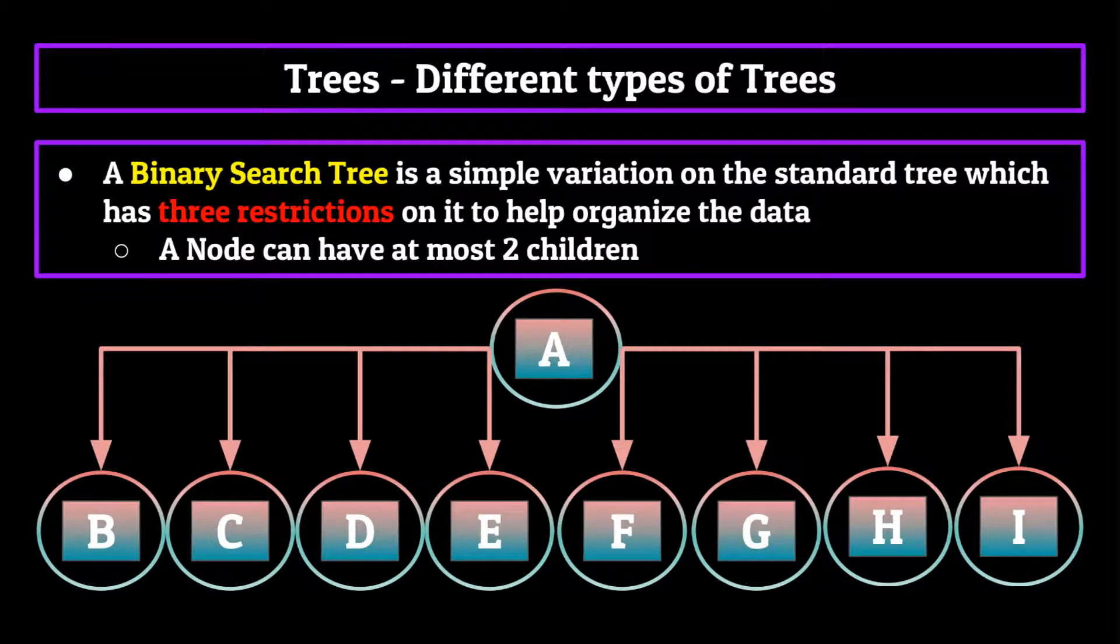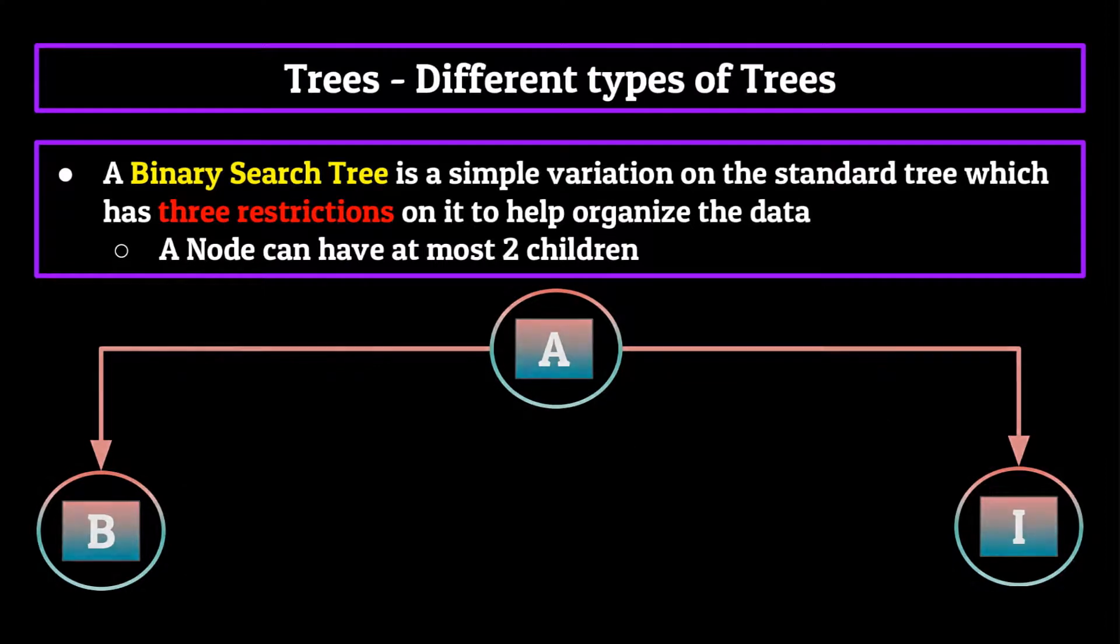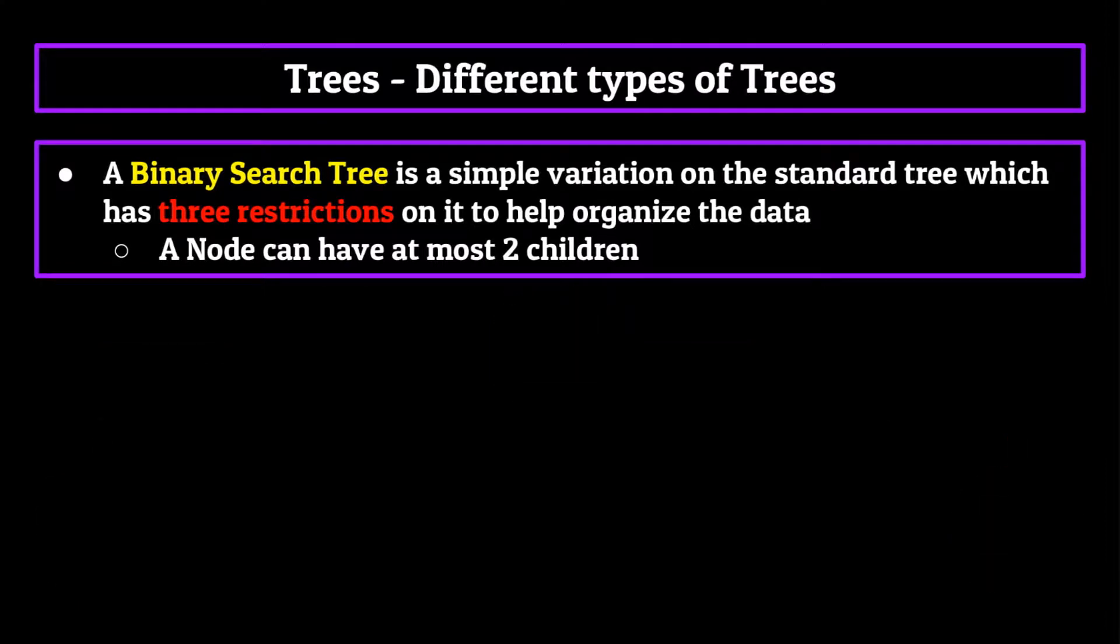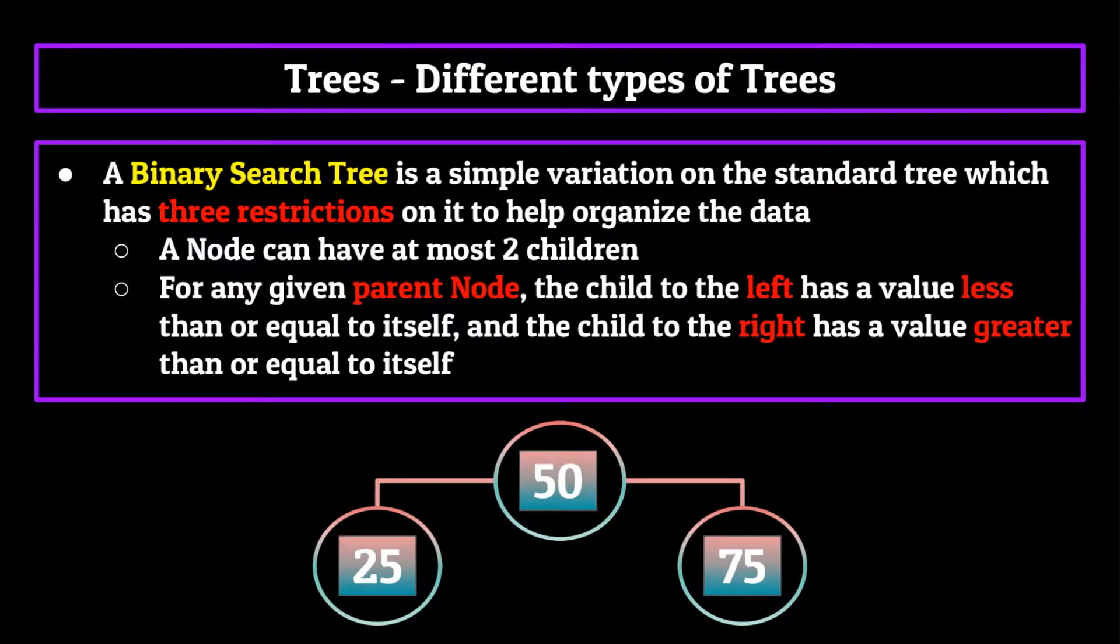The first is that a node can have at most two children. This just helps make it easier to search through the tree, as we don't have to spend time looking through each of the eight children for a particular node, or however many children the node might have. Keeping it limited to two helps us do this. The second restriction, or property, is that for any given parent node, the child to the left has a value less than or equal to itself, and the child to the right has a value greater than or equal to itself.